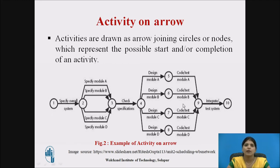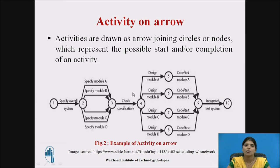Here, nodes 1 through 10 represent events, and each pair of nodes is connected with an arrow representing an activity. From node 1 to 2, we specify the overall systems. From node 2 to 3, there are 4 modules — specify module A, module B, module C, and module D. From node 3 to 4, check the specification. From 4 to 8 and 4 to 9, there are 4 intermediate nodes for design modules A, B, C, D. Finally, from node 9 to 10 is integrating the overall system. This is activity on arrow — the activities are represented on the arrows.